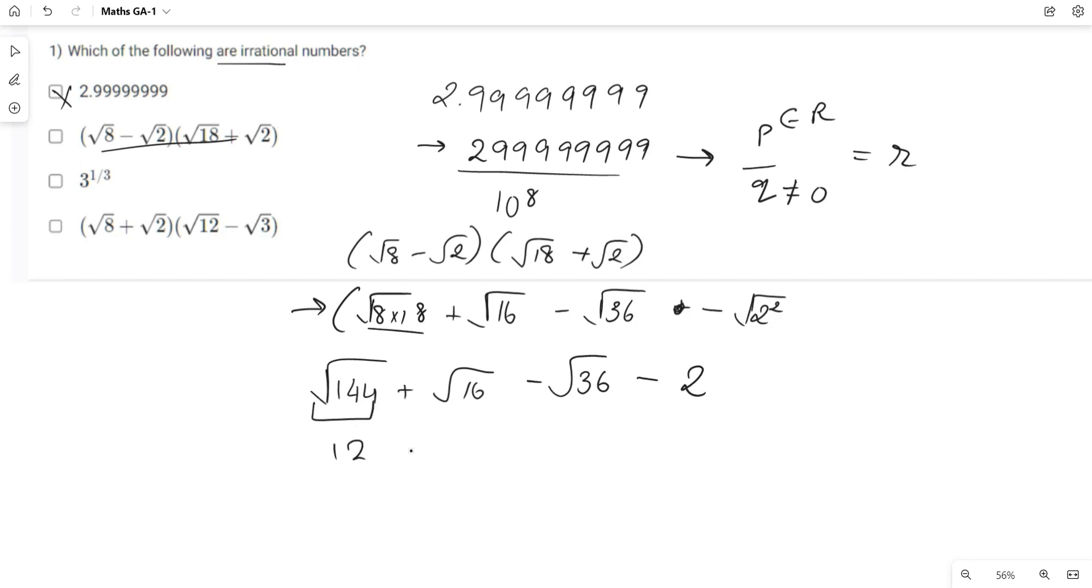Root 144 is 12, plus root 16 is 4, minus root 36 is 6, minus 2, which equals 8. 8 is a real number, an integer, so it's not an irrational number.